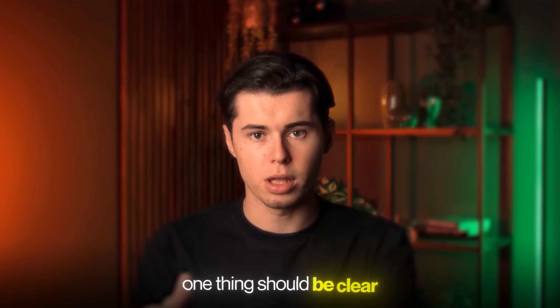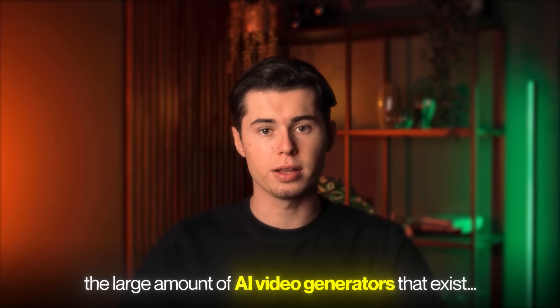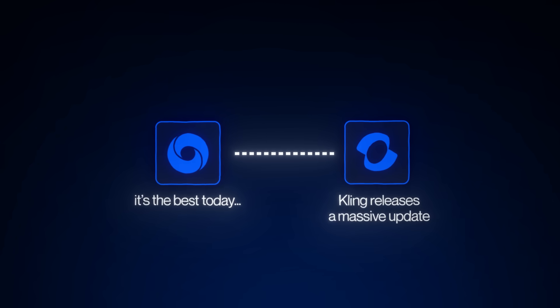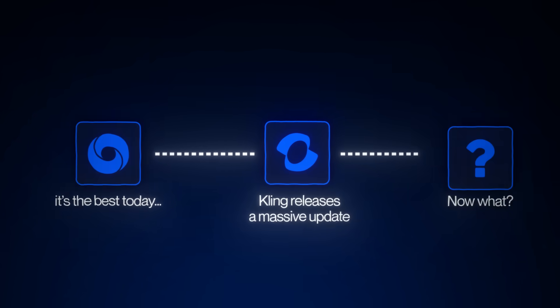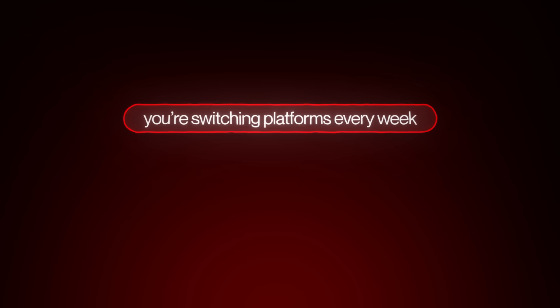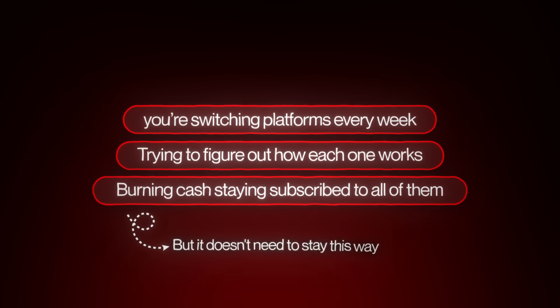At this point, one thing should be clear: there isn't a single AI video tool that outshines the others — they're all great at what they do. But the biggest problem we still haven't solved is the sheer number of AI video generators out there. You sign up for Veo because it's the best today? Then a week later, Kling releases a massive update that blows everything else out of the water. Now you're stuck with a subscription you already paid for while the new best option is sitting behind another paywall. That's the constant challenge with AI video right now — the tools evolve so fast that you're always feeling behind.